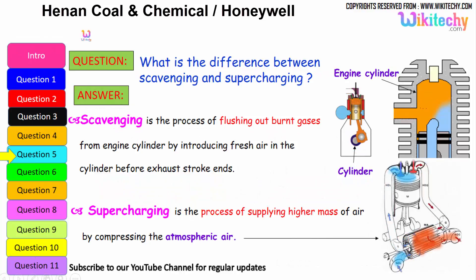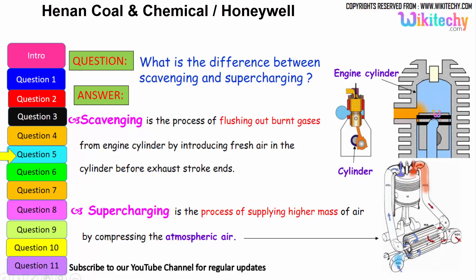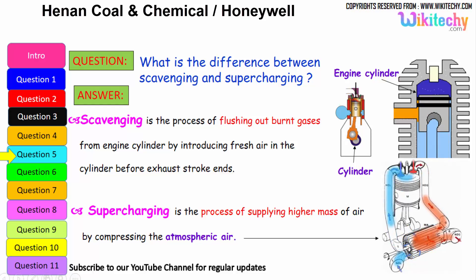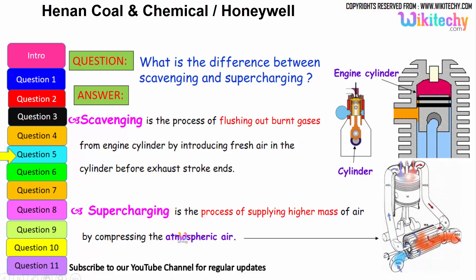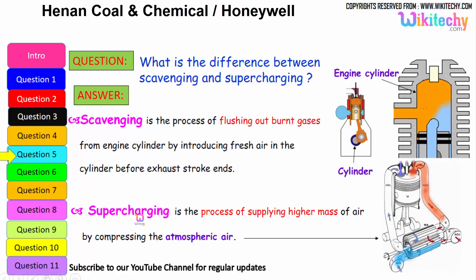Let us move on to the next question: what is the difference between scavenging and supercharging? Scavenging is the process of flushing out the burnt gases from the engine cylinder by introducing fresh air into the cylinder before the exhaust stroke ends. Supercharging is the process of supplying high-pressure air by compressing atmospheric air, and that is referred to as supercharging.